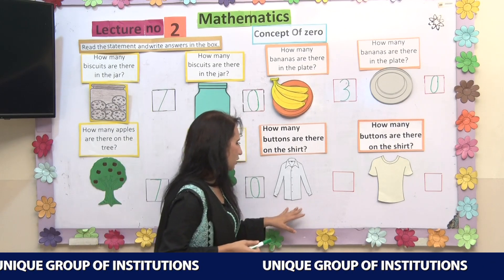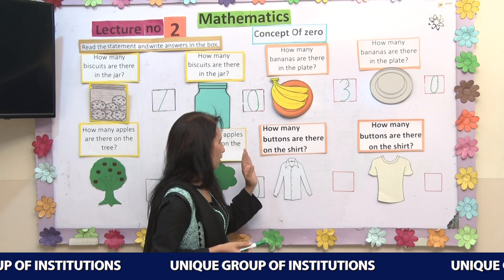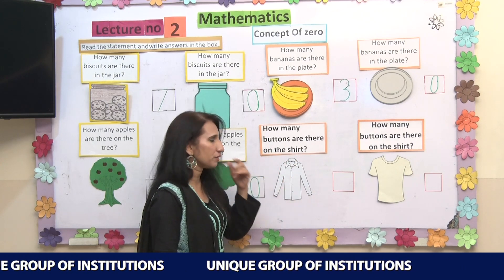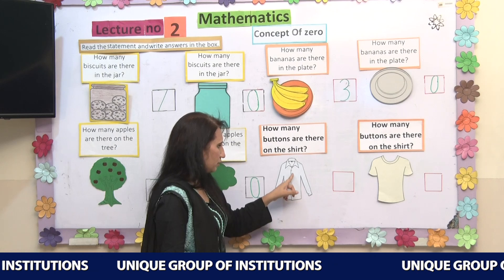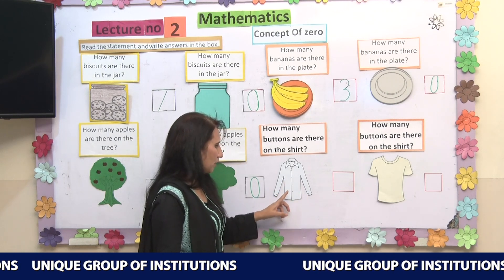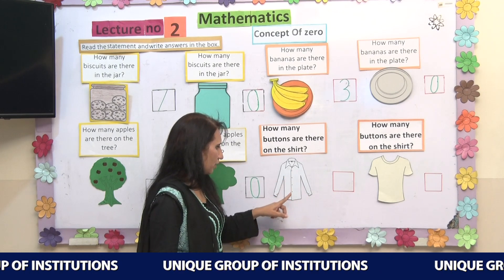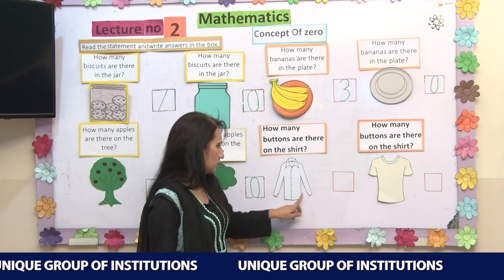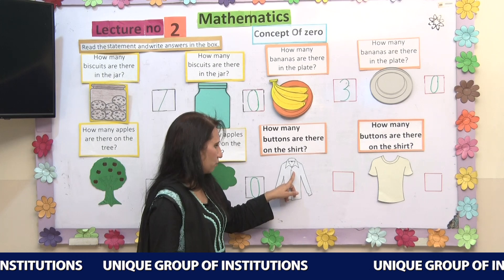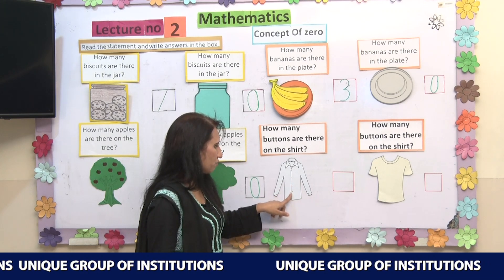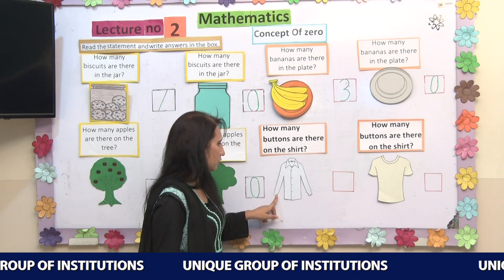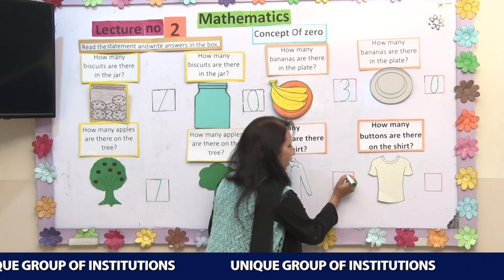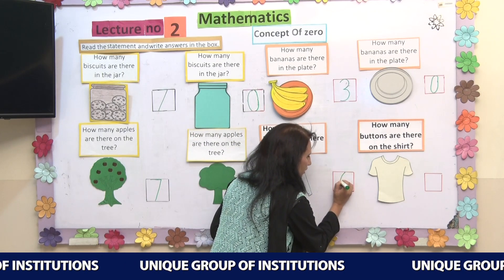Let's move here. You can see a shirt. The caption is: how many buttons are there on the shirt? There are some buttons — let's count: 1, 2, 3, 4 on the front, and 1 on each sleeve. Let's count again: 1, 2, 3, 4, 5, 6. There are 6 buttons on this shirt, so I will write number 6 in the box.